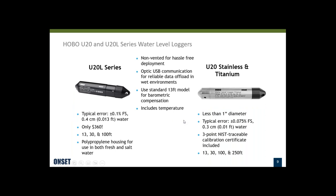Starting with a brief overview of our U20 series loggers: we actually have two series within this series. One is our U20L series in a polypropylene housing, and the other is our U20 series with stainless steel and titanium housings. Both series share common features — they're non-vented, which makes them especially easy to deploy. They have optical communications for reliable offload in wet environments. To use these, you need barometric pressure data to compensate for barometric pressure changes.